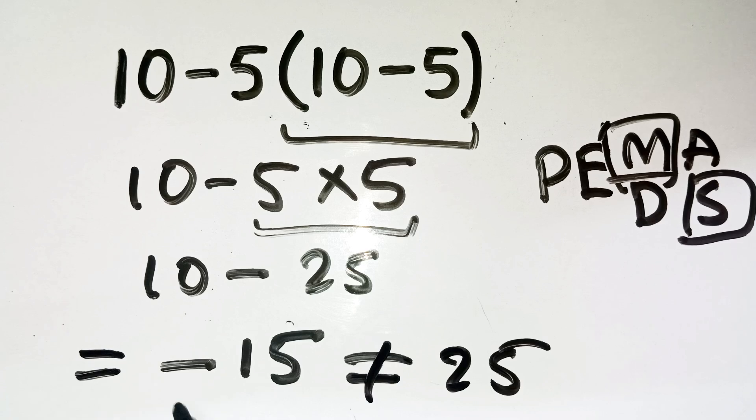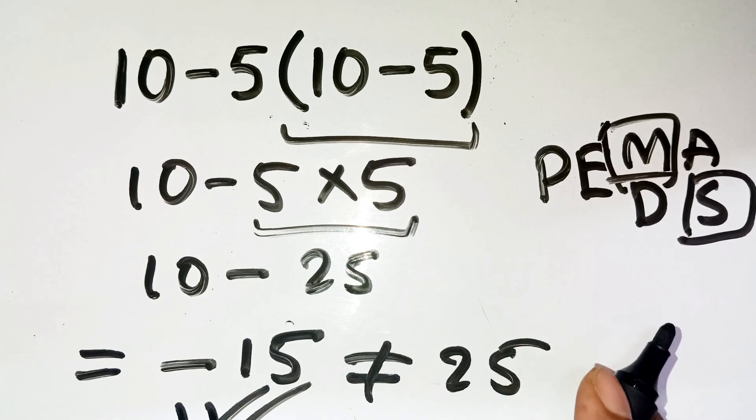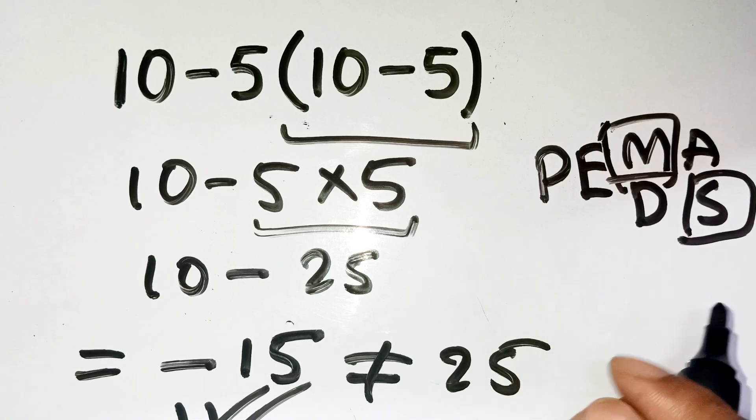So the correct answer is negative 15, not 25. Pretty sneaky, right? It's those little priority rules that flip everything around.